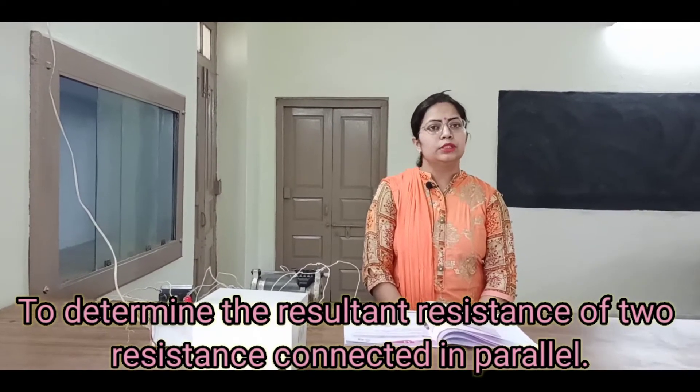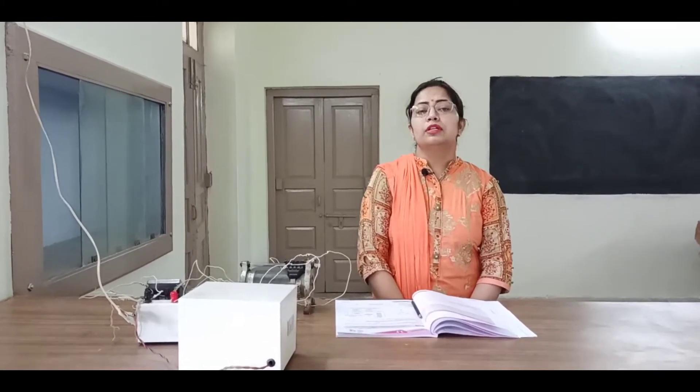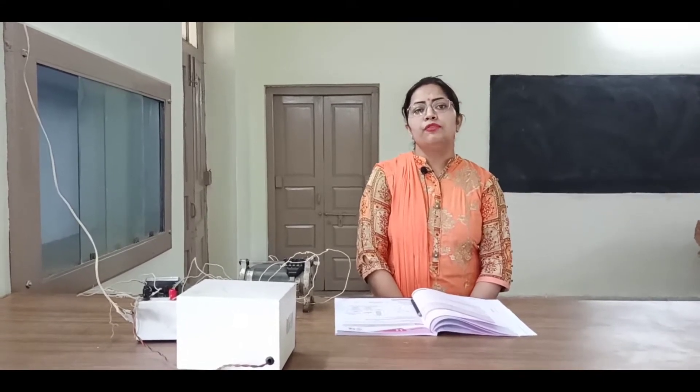When we say that two resistors are connected in parallel, it means one end of all the resistors is connected to one common point and the other end of all the resistors is connected to another common point. The formula to calculate the resultant resistance when resistors are connected in parallel is: the reciprocal of the resultant resistance equals the sum of the reciprocals of all the resistors connected in parallel.